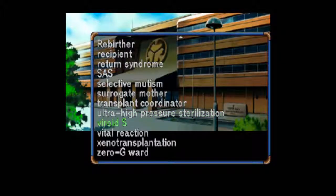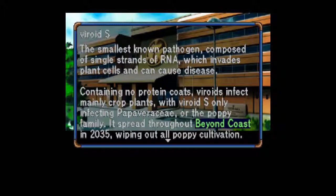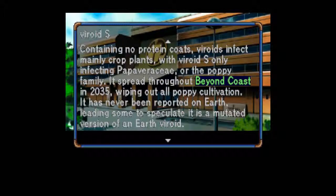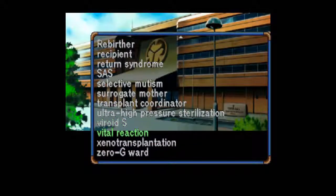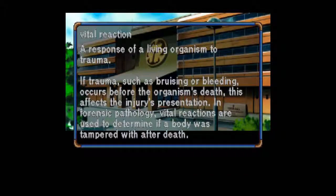Four more — won't call it a long episode. Vyroid S: The smallest known pathogen, composed of single strands of RNA, which invades plant cells and can cause disease. Containing no protein coats, Vyroids infect mainly crop plants, with Vyroid S only infecting Papaveraceae — the Poppy family. It spread throughout Beyond Coast in 2035, wiping out all Poppy cultivation. It has never been reported on Earth, leading some to speculate it is a mutated version of an Earth Vyroid. Called Vyroid S because its structure resembles the letter S of the Latin alphabet. Vital Reaction: A response of a living organism to trauma. If trauma such as bruising or bleeding occurs before the organism's death, this affects the injury's presentation. In forensic pathology, vital reactions are used to determine if a body was tampered with after death.